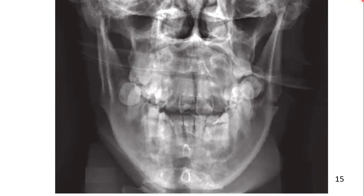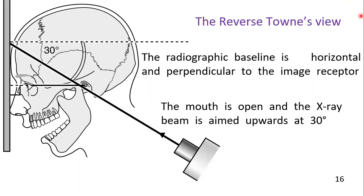There is another view showing a fracture in the angle area. Now let's see the position of the patient and the difference of the reverse Towne view from the PA jaw. Here you can see the forehead-nose position of the patient. The radiographic baseline is again horizontal and perpendicular to the image receptor.